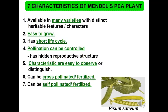Let's look at the seven characteristics of Mendel's pea plant — why Mendel chose the pea plant for his experiments. First, it is available in many varieties with distinct heritable features. Second, it is very easy to grow. Third, it has a very short life cycle. Fourth, pollination can be controlled as it has a hidden reproductive structure. Fifth, characteristics can be easily observed or distinguished. Sixth, it can be cross-pollinated or fertilized. Finally, it can be self-pollinated or fertilized.